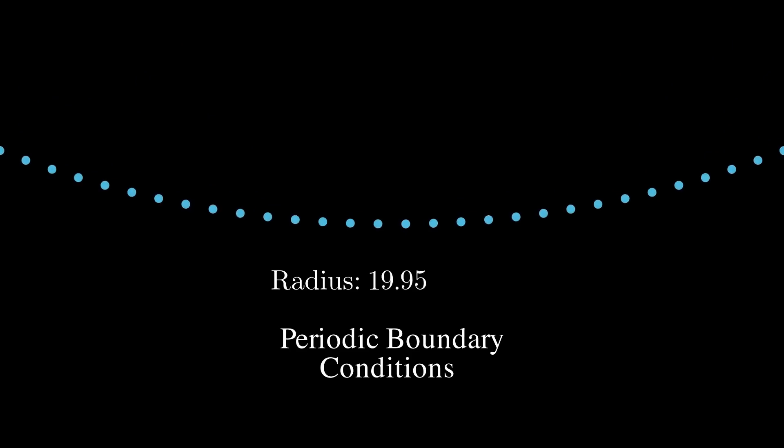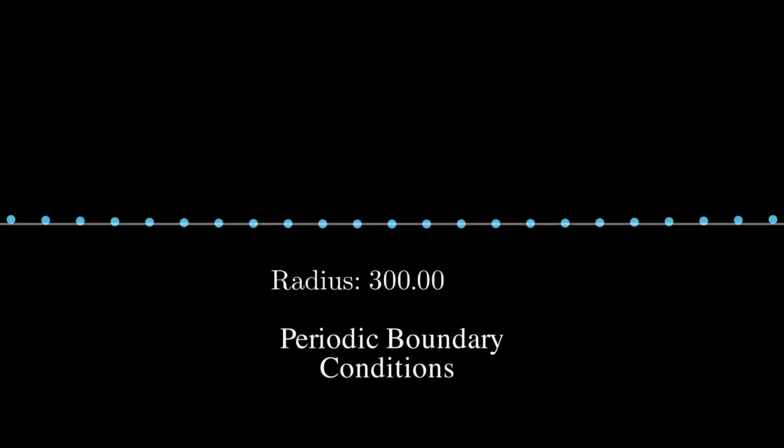Notice that as I increase the radius of this circle along with the number of points, that the edge of this circle becomes closer and closer to a straight line. And you can imagine in the limit as the radius goes to infinity, well, it actually does become a straight line.